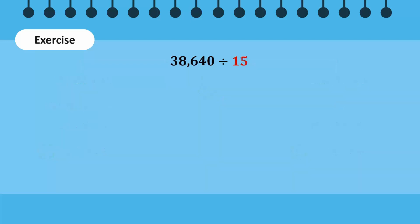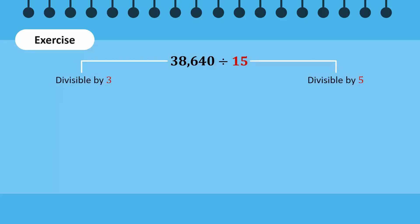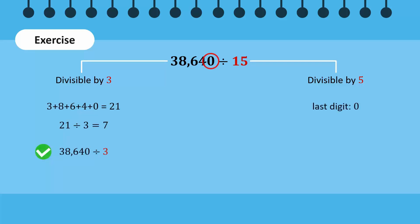Let's move on and find out if 38,640 is divisible by 15. For that, we will check if it is divisible by the factors of 15, which are 3 and 5. We already know that this number is divisible by 3, since the sum of its digits is 21. But is this number divisible by 5? Yes, because the last digit of this number is 0. Therefore, by the rules of divisibility, it is divisible by 5. Since this number is divisible by both factors of 15, that is 3 and 5, therefore it is also divisible by 15 itself.